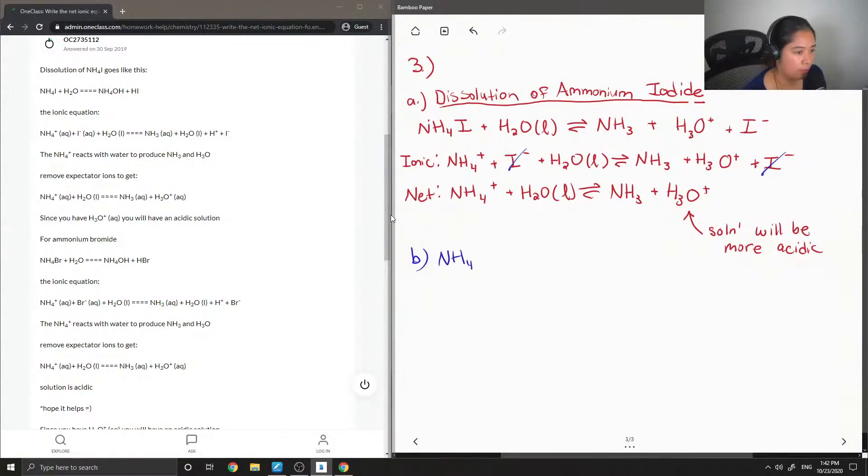We have ammonium bromide plus H2O, and then I'm going to write out the ionic equation.